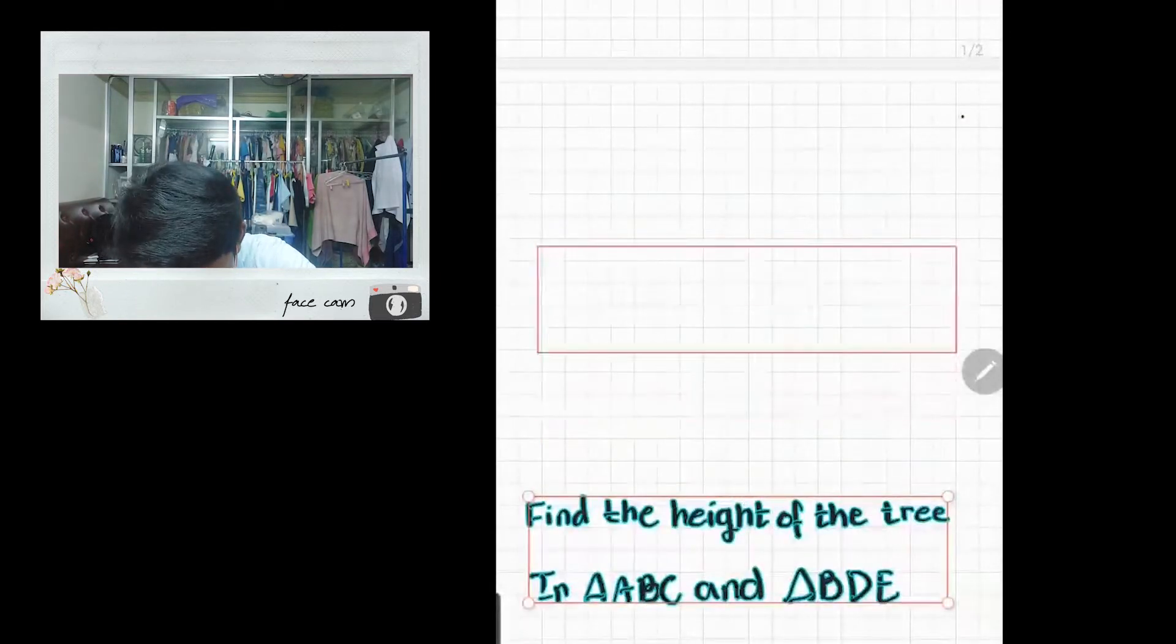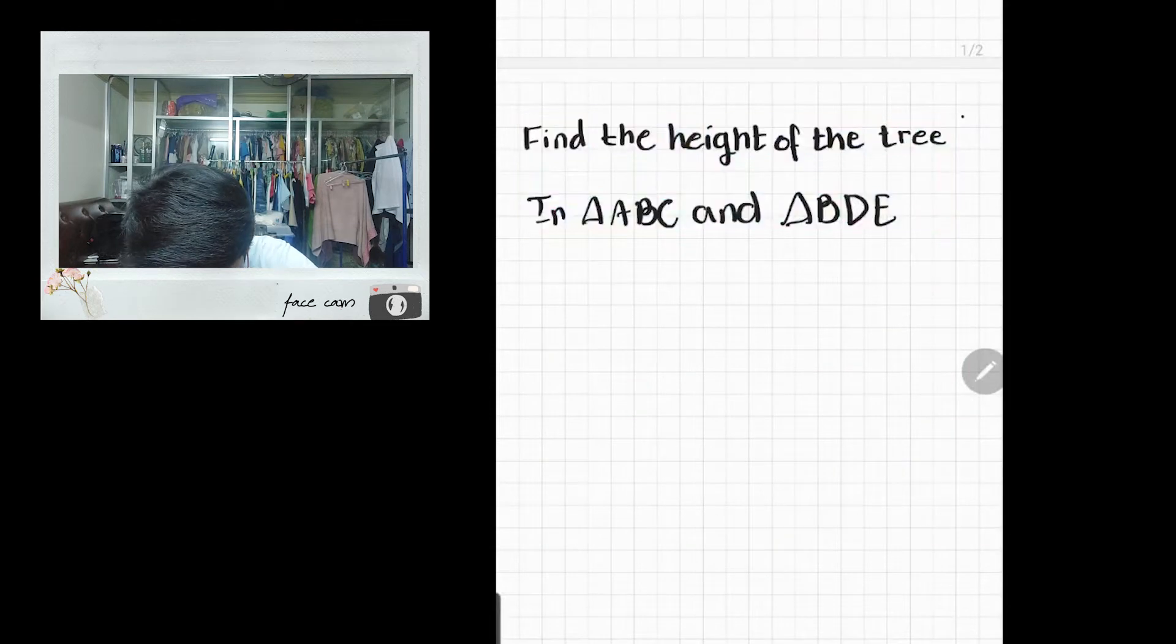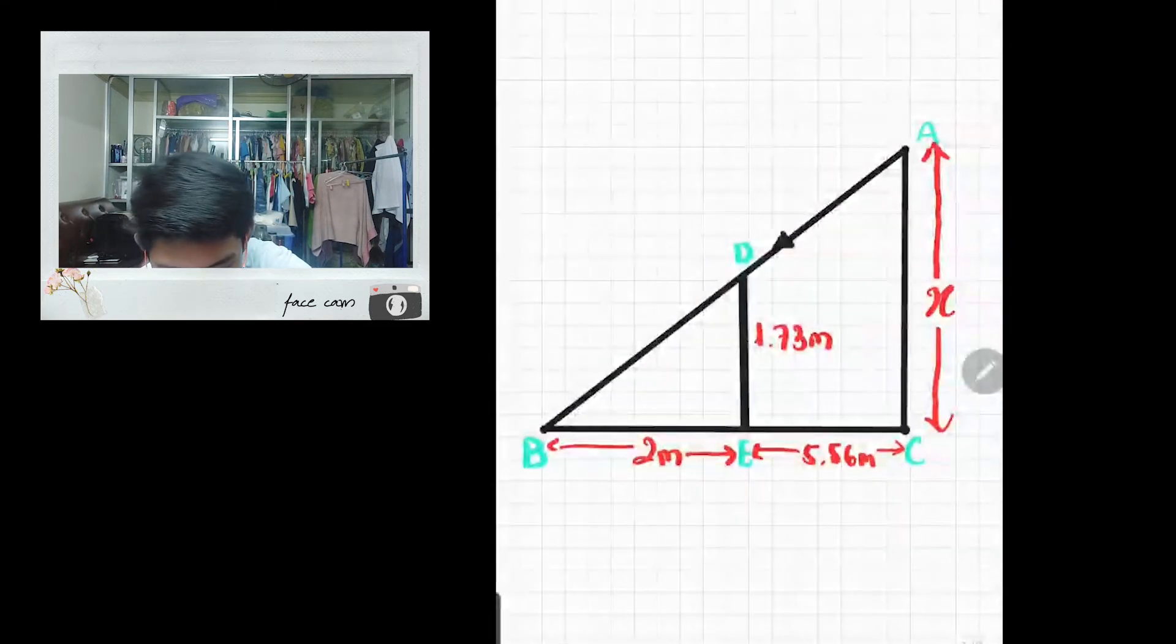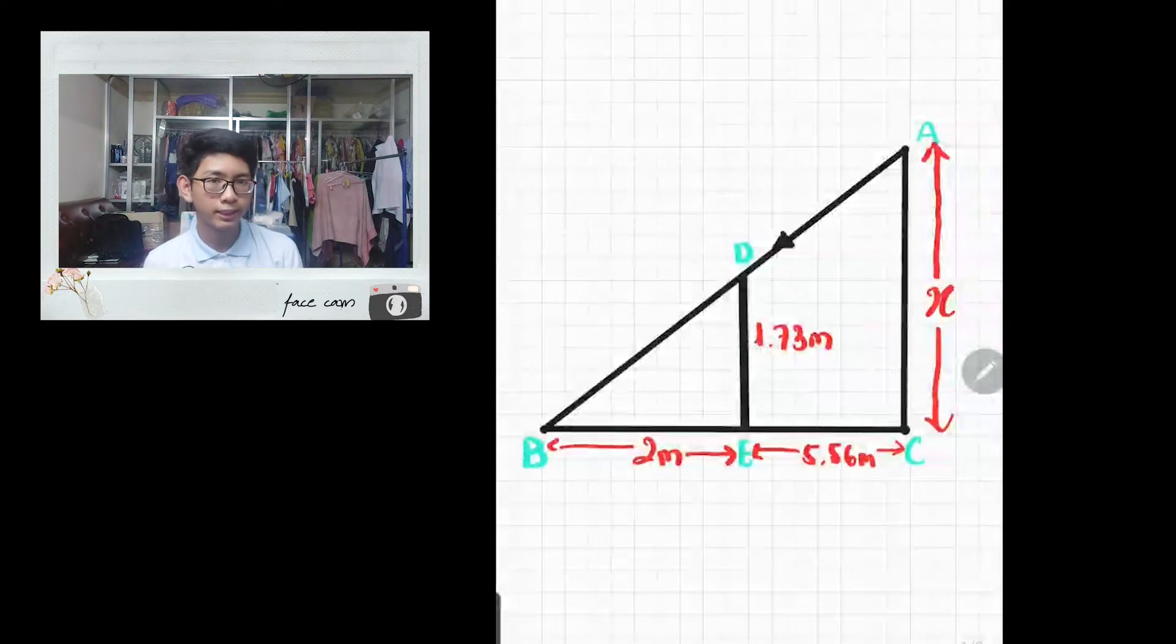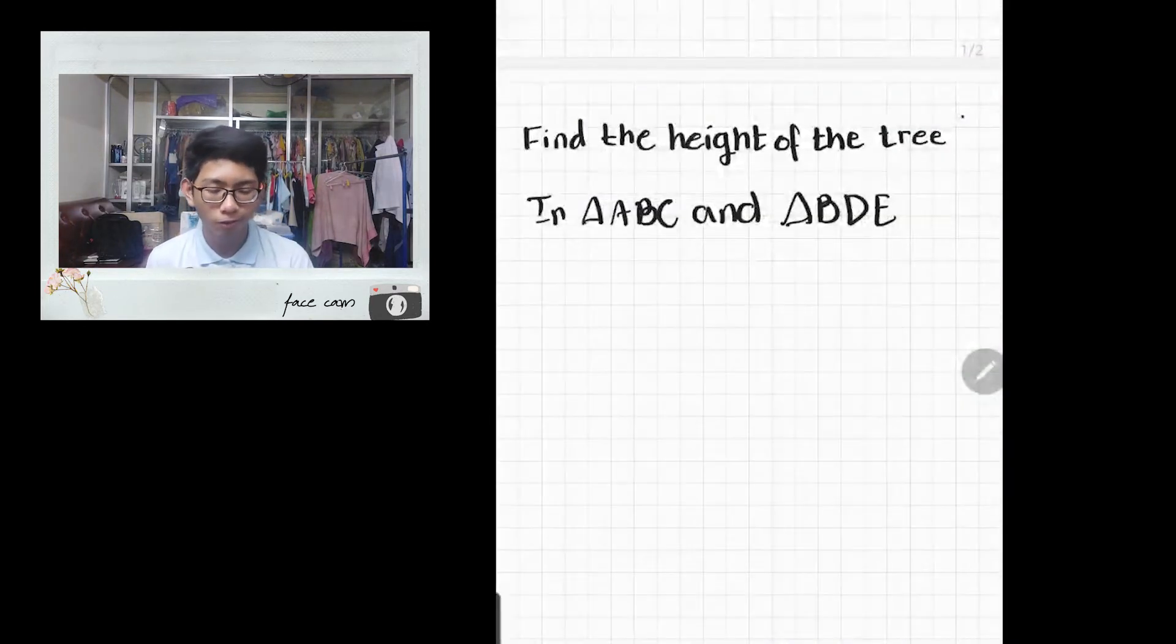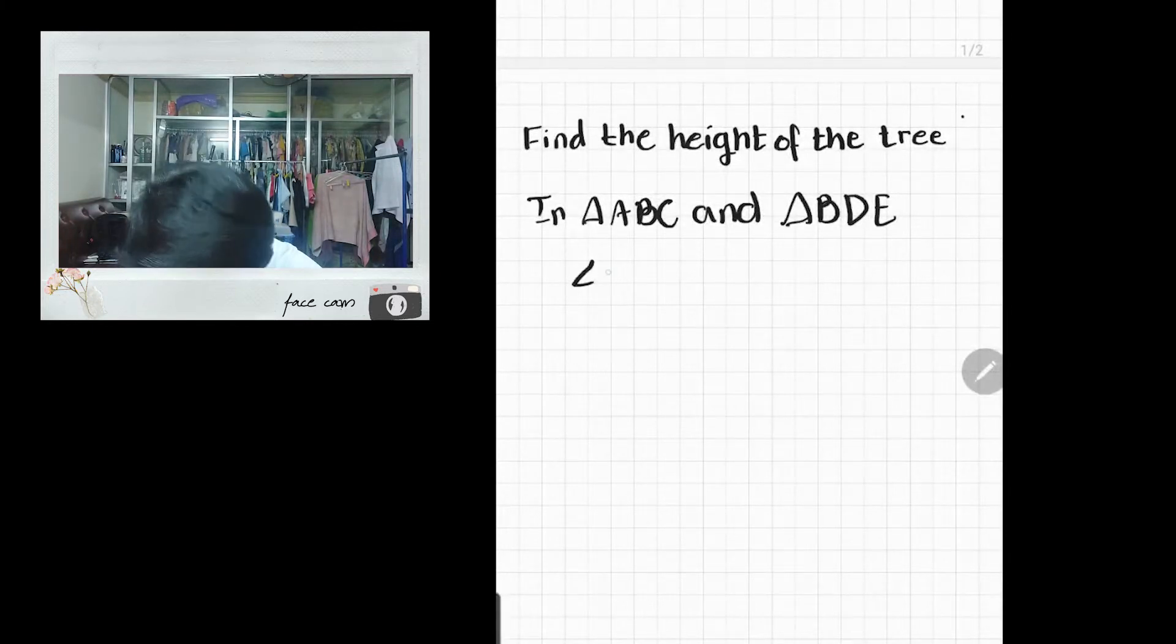But before we can solve for x, we must observe the relationship between both triangles first. From the first glance, we can tell that both triangles are right triangles, so angle ACB and angle DEB would both be 90 degrees. So let's note that down.